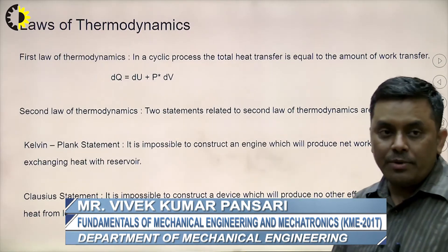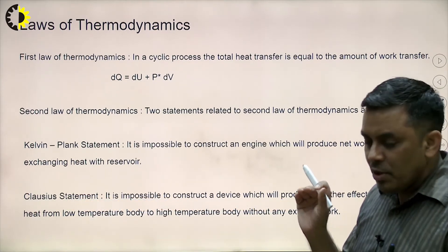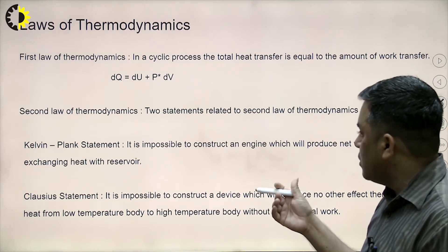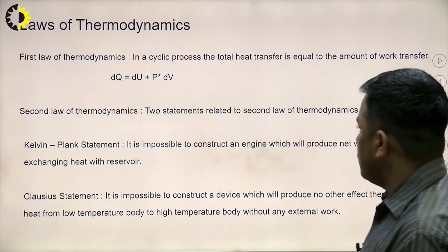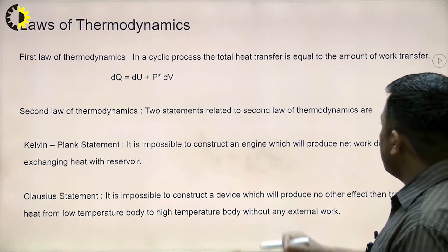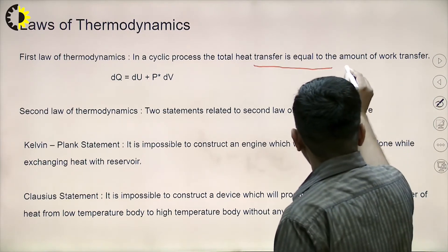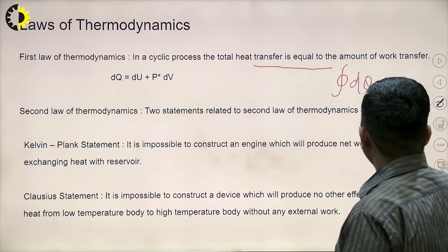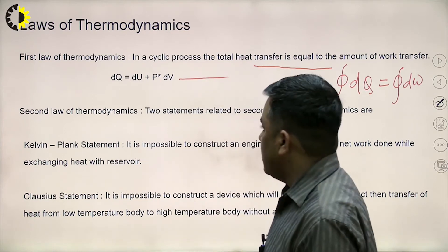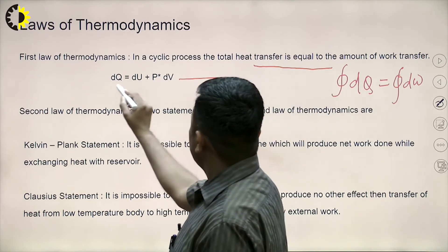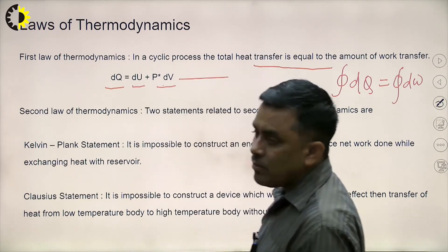Before moving to refrigeration systems, there are certain things related to thermodynamics which we must know, at least their definitions, because these laws are applicable when we discuss refrigeration systems. The very first law of thermodynamics: in a cyclic process, the total heat transfer is equal to the amount of work transfer. In simpler form, dQ equals dU plus P·dV, meaning total heat transfer is converted into net work and change in internal energy.